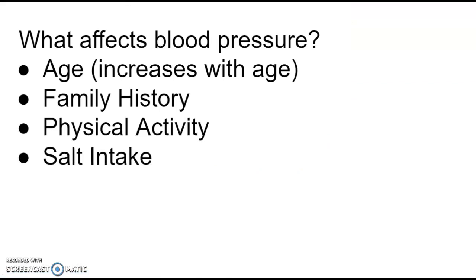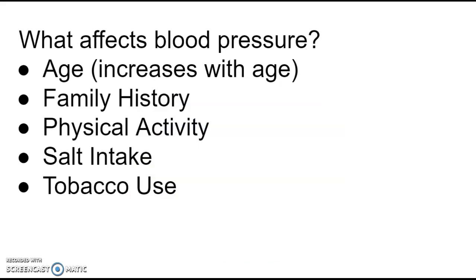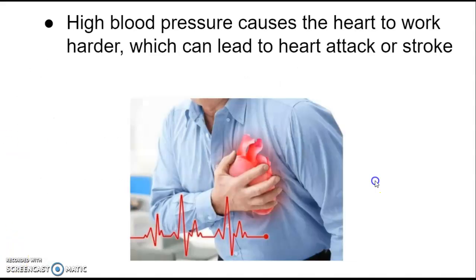So factors to write down include salt intake and tobacco use, and also dehydration. The last thing to think about is why high blood pressure is a problem. First, it causes the heart to work harder — the heart has to push harder to get blood through the arteries. Second, high blood pressure can cause little tears in the arteries, which the body tries to repair by forming clots and plaques on the inside of the artery walls, narrowing them further. This can lead to heart attack or stroke — and we will talk about how heart attacks work in another lesson.